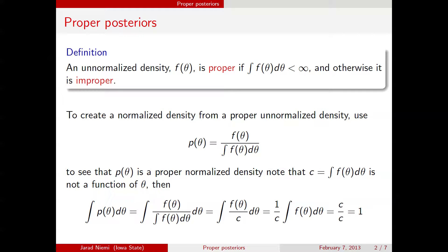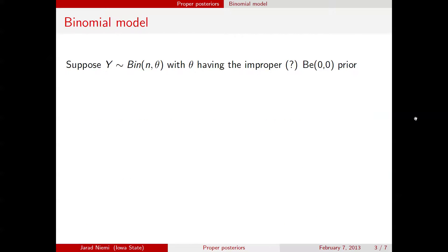So again, to create a normalized density from a proper unnormalized density, just take the unnormalized density and divide by its normalizing constant. I wanted to give a quick example of proper and improper in the case of a binomial model. Suppose we have binomial data with success probability theta, and we're going to assume the prior that has this form — the so-called beta(0,0) prior.